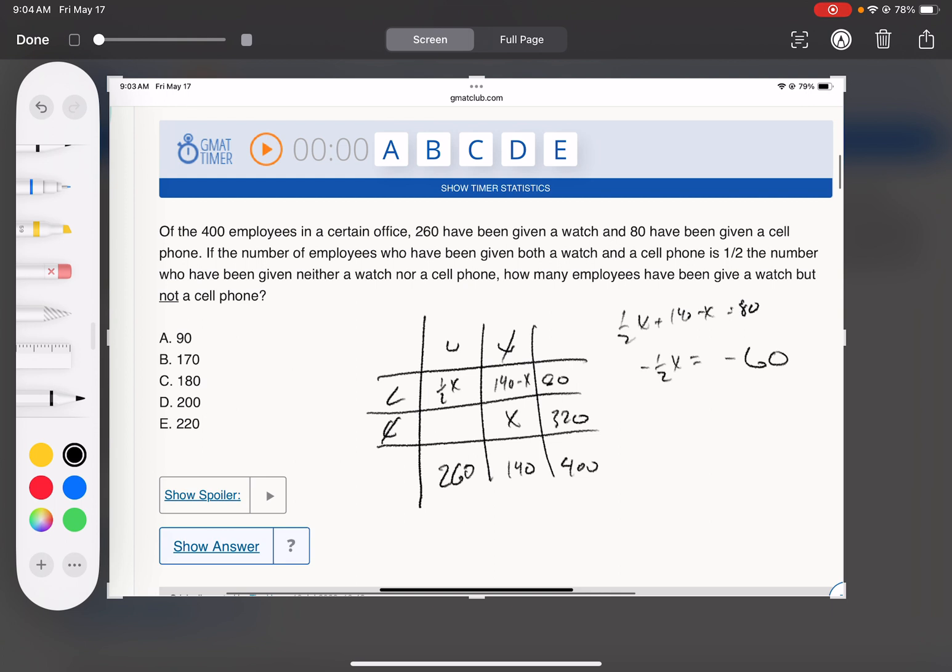Multiplied by negative 2, x equals 120. So I know this box is 120. Here, subtract that over, that leaves me 200. 320 minus 120 is 200.